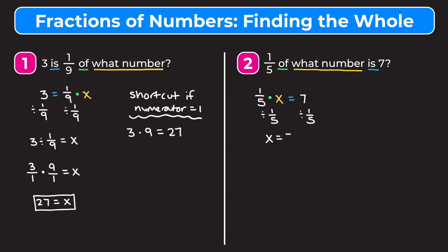To solve for x we divide both sides of our equation by one fifth. On the left side, one fifth divided by itself is one, so we're left with x. On the right side we have seven divided by one fifth. We use keep-change-flip: rewrite seven as seven over one, change division to multiplication, and flip one fifth to be five over one. Seven over one times five over one is 35 over one, which is just 35. So x equals 35, meaning one fifth of 35 is equal to seven.